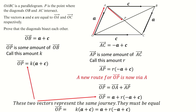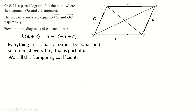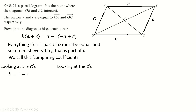This brings us to equating coefficients. I've put all the vectors in bold because they're vectors. Everything attached to an A vector on one side must equal everything attached to an A vector on the other side, and likewise for C. On the left-hand side I've got K·A. On the right-hand side I've got 1·A minus R·A. So K equals 1 minus R.